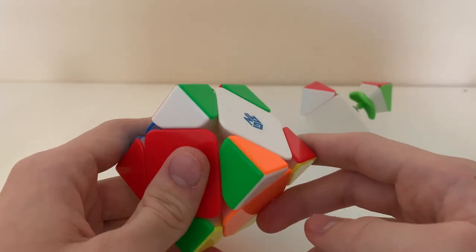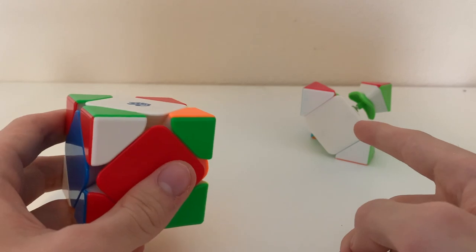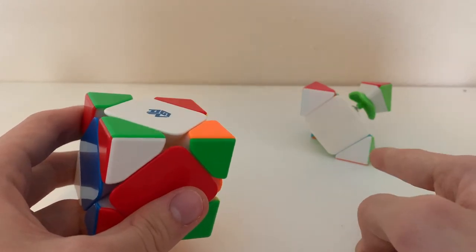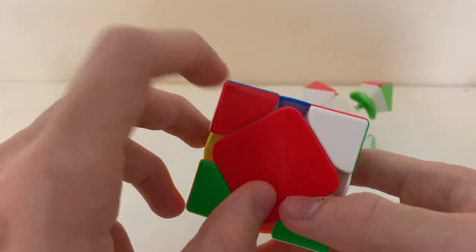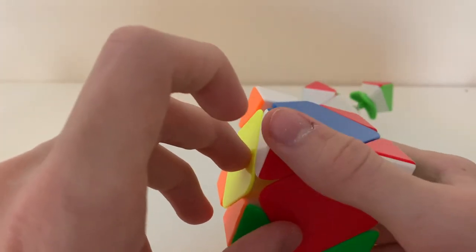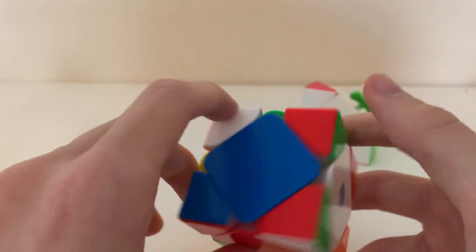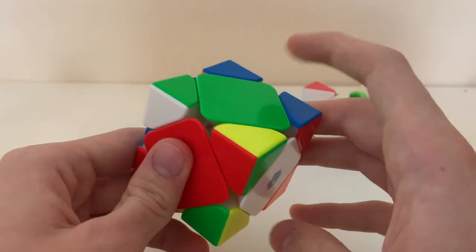The first step is to solve a bar, which is the center piece between any two opposite corners. In this example, since we have a red paired with one of its corners already, we only have to solve the other corner, which happens to be here, which we can do in one move.